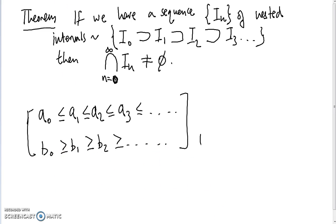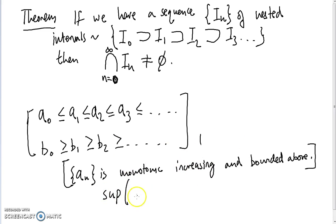Which means that our sequence of left end points of our intervals a_n is monotonic increasing and bounded above. So we can apply the least upper bound property of the real numbers now. Therefore the supremum of the sequence {a_n} exists.